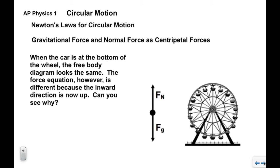When we look at somebody at the bottom of the Ferris wheel, so this car at the bottom, the free body diagram looks the same. We still have an FG, we still have an FN. But the force equation is going to be different because now when it's at the bottom, up is the inward direction and down is the outward direction. So when we write the force equation for the bottom of the Ferris wheel, FN becomes positive, FG is negative, and then the right side is MV squared over R.